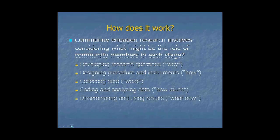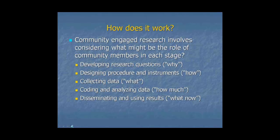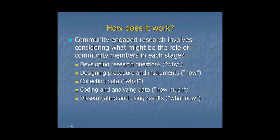How does it work? We'd like to review how community-engaged research functions at each stage of the research process and the role of community partners in each stage. The stages involve developing research questions — the why of the project — designing procedures and instruments, collecting data, coding and analyzing data, and disseminating results. Many of these stages also apply to community projects in terms of designing, implementing, and integrating an evaluation component.